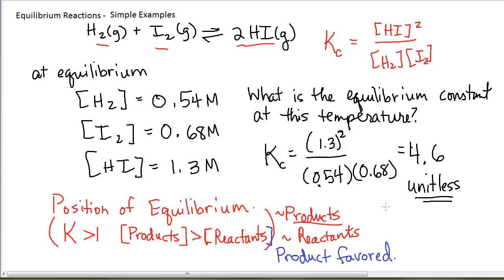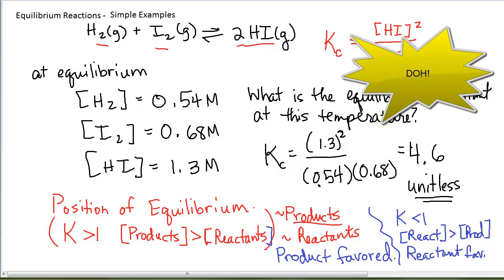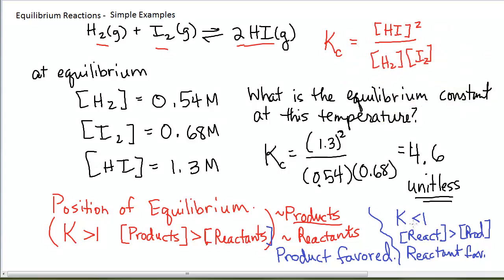If, on the other hand, the equilibrium constant is less than 1, that means my ratio would give me a smaller numerical value than 1. My reactants would be, on average, larger than my products at equilibrium. Reactants are larger than products, and this would be considered a reactant-favored reaction. I also could talk about the fact that the equilibrium lies to the left, or that this is a reactant-favored reaction.